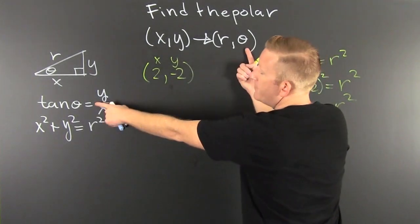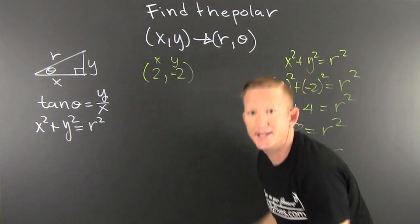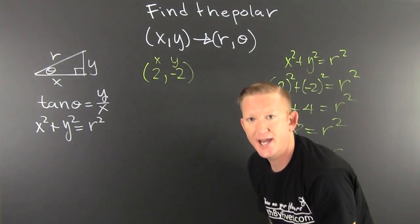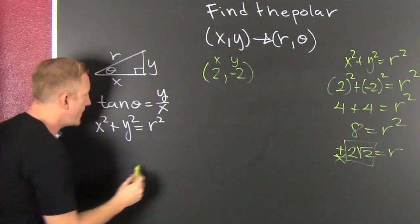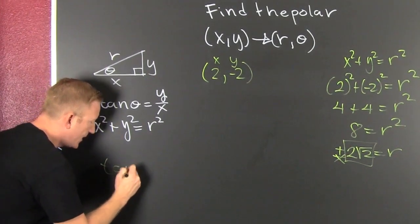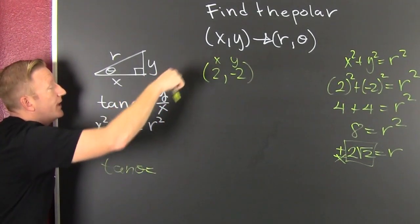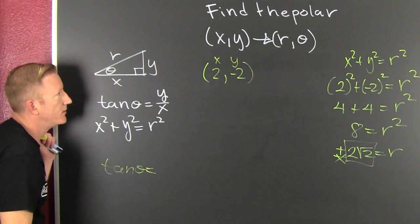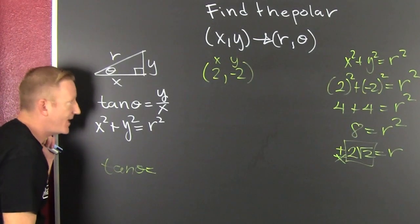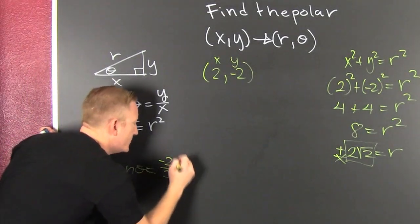I need to find my theta. In order to find my theta, I'm going to use this quotient and the inverse tangent. The tangent of theta equals my Y over my X. So that's minus 2 over 2.